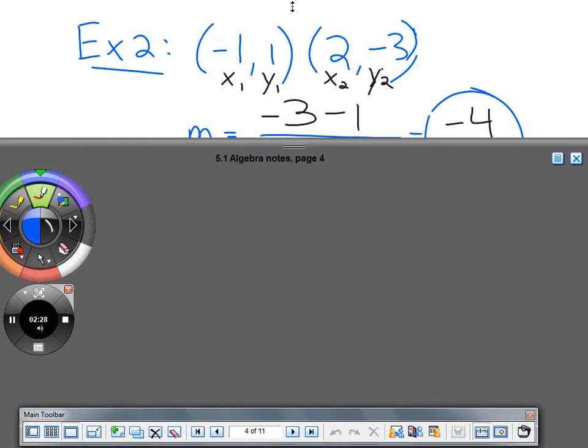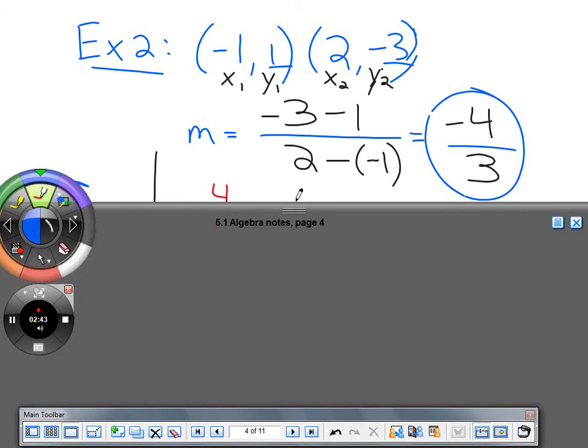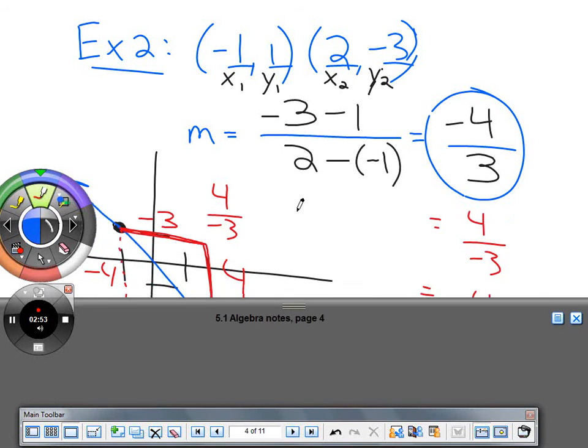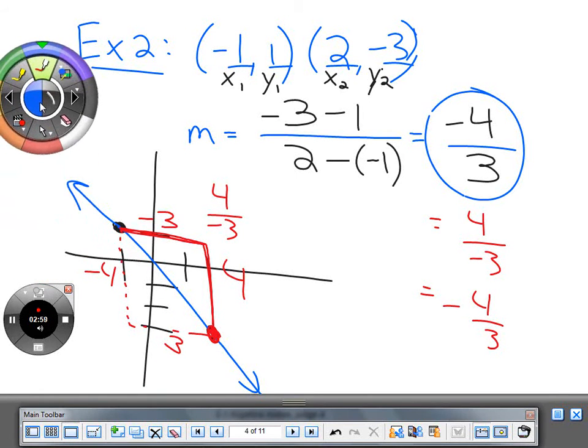Next problem, same thing with different points. We take Y₂ minus Y₁, so negative 3 minus 1 gives us negative 4 on top. On the bottom, it's 2 minus negative 1, which is 2 plus 1, equals 3. The answer is negative 4 thirds. If we plot these points, the line goes down. We go down 4 and over 3, so the slope is negative 4/3.